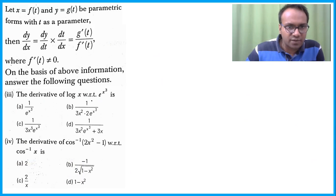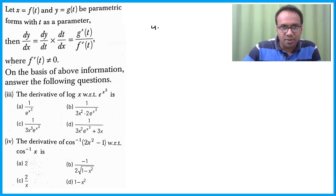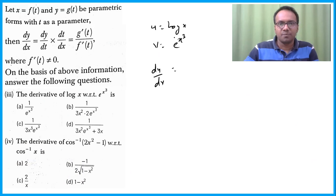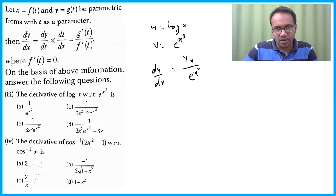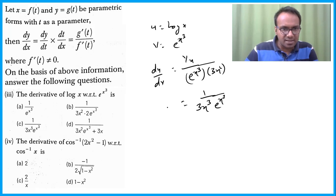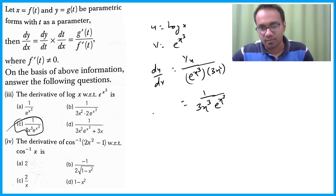Derivative of log x with respect to e^(x³). Let u = log x and v = e^(x³). du/dx = 1/x. dv/dx = e^(x³) · 3x². So du/dv = (1/x) / (3x² · e^(x³)) = 1 / (3x³ · e^(x³)). The answer is 1/(3x³ · e^(x³)), option C.